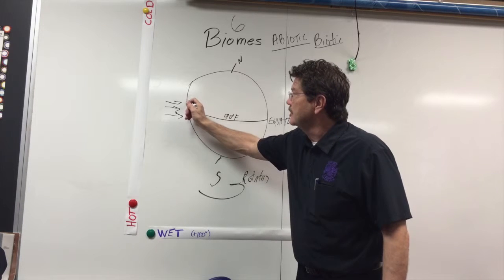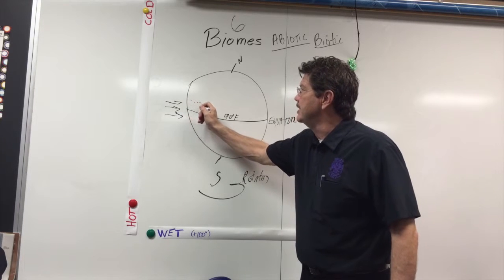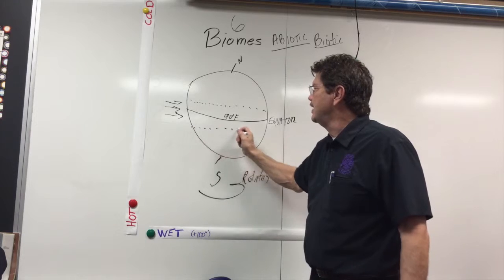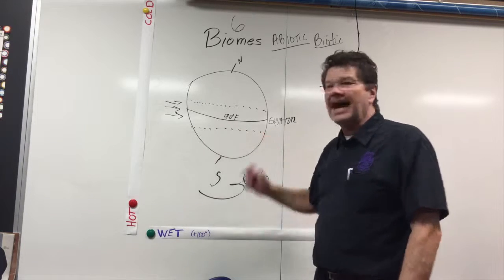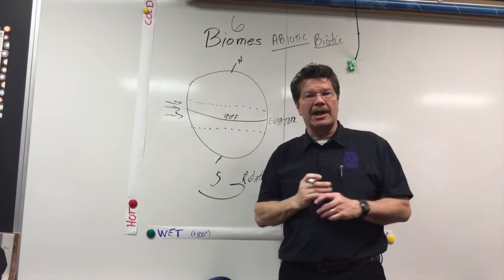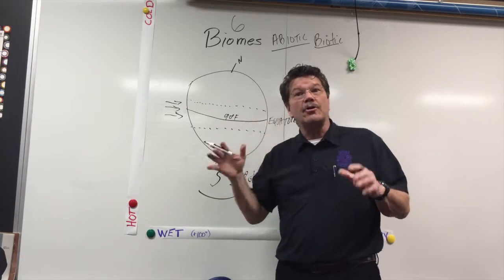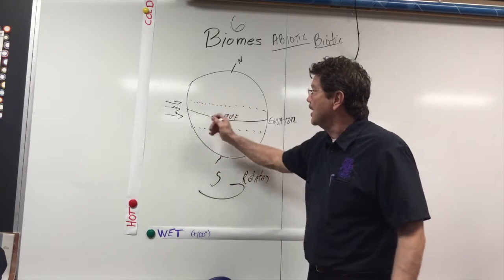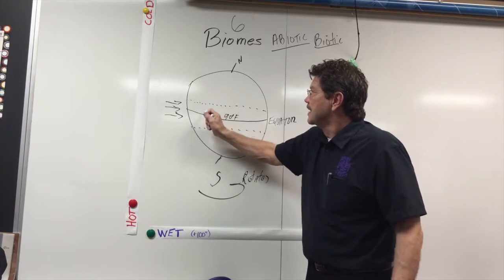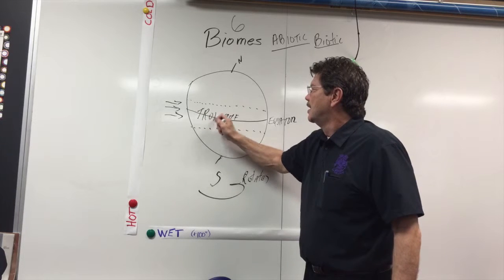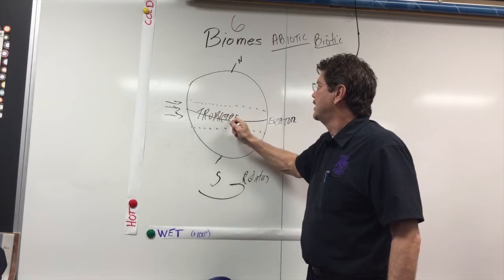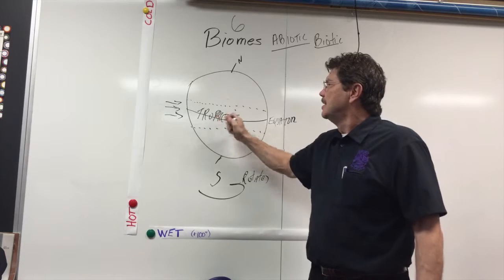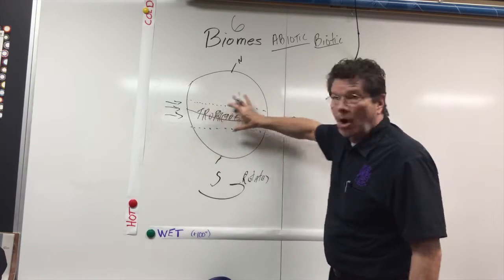About 23 degrees north and about 23 degrees south, we have two other imaginary lines called the Tropic of Cancer and the Tropic of Capricorn. This region is called the tropics, and it's always hot here.